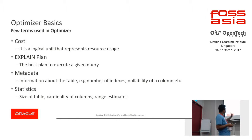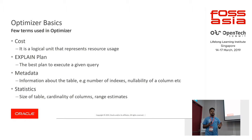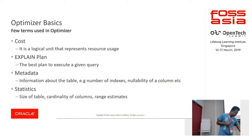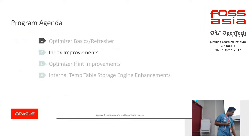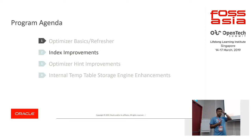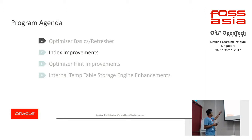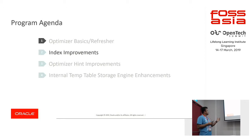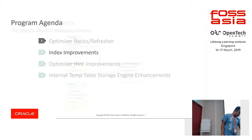These four things — cost, explain plan, metadata, and statistics — are the ones that are going to help you generate the best possible query solution. I'll cover three things: the index improvements, the optimizer hint improvements, and something called the internal temp tables. Let's start with the index improvements.